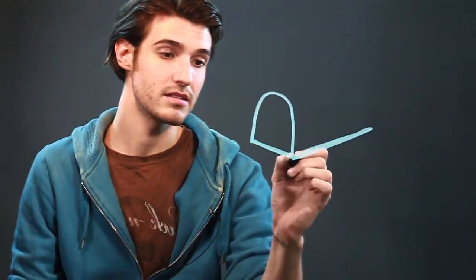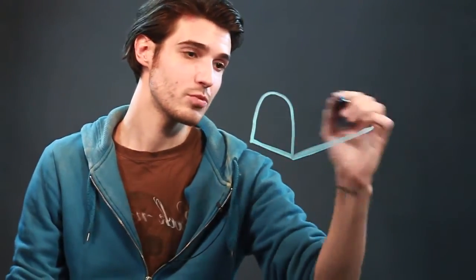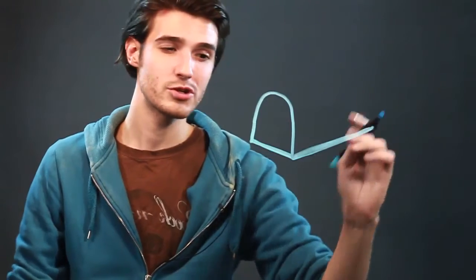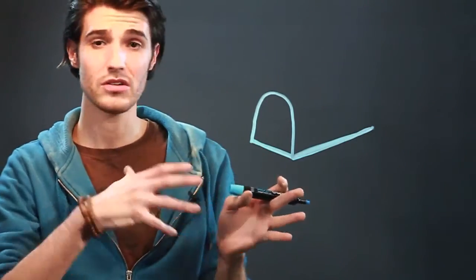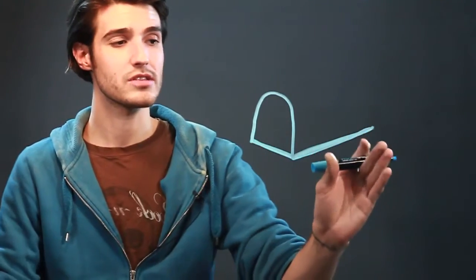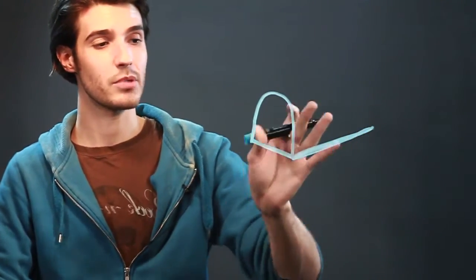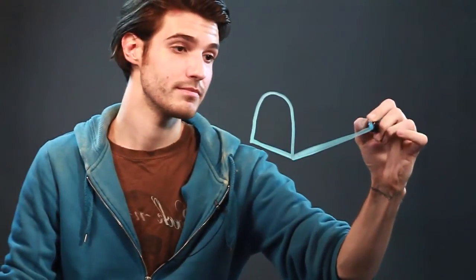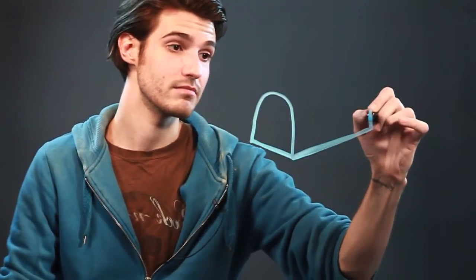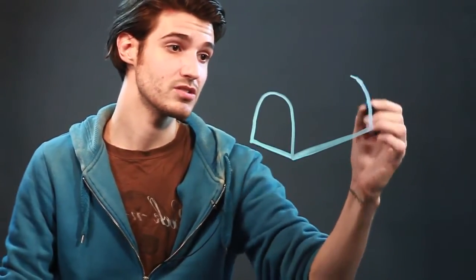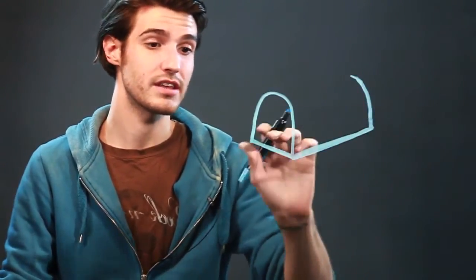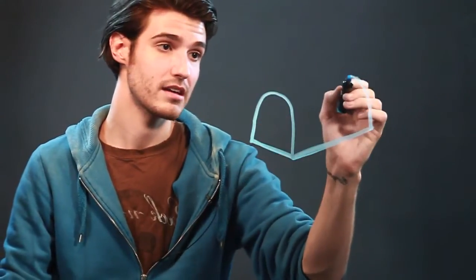We're going to make an arc that connects to that line and connects to the middle section here. Whenever you're drawing something from a certain angle, you want to make sure that both sides are going the same way. So we're also going to follow an arch that follows this front arch in the back.